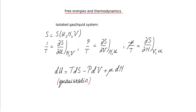We derived the differential form of the first law of thermodynamics from partial derivatives of S. This law is given as dU = T dS minus P dV plus mu dN, where T dS represents the heat, and it equals the heat only for quasi-static processes. It may be that T dS is larger than Q, in which case there are spontaneous processes.